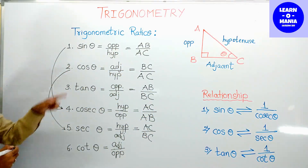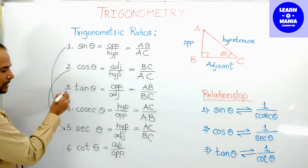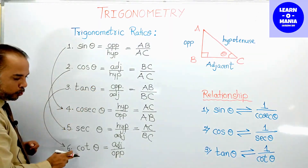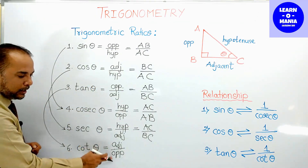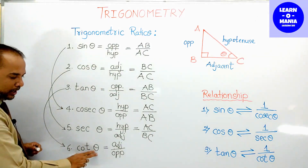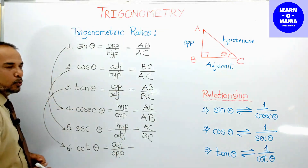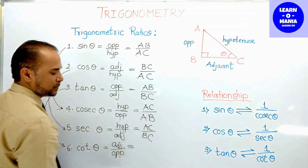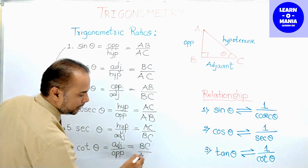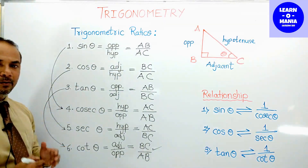So cos theta and sec theta have an inverse relationship with each other. Now the last one: cot theta. Tan theta and cot theta are inverses of each other. Tan theta is opposite upon adjacent, and cot theta is adjacent upon opposite. As per this figure, cot theta equals BC upon AB.